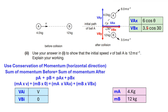Let me explain the horizontal components for velocity A and B. V-Ax is adjacent to angle theta, so we use cosine. V-Ax is V-A, which is 6, cosine of theta because it's adjacent. V-Bx is V-B, which is 3.5, cosine of 30 because it's adjacent to 30. This is the expression for the horizontal components for velocity A and velocity B.